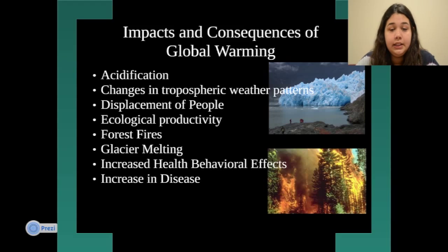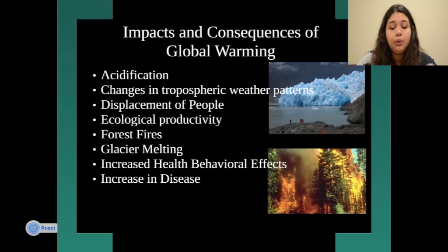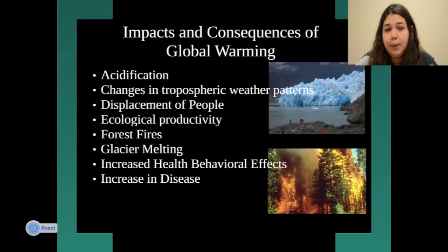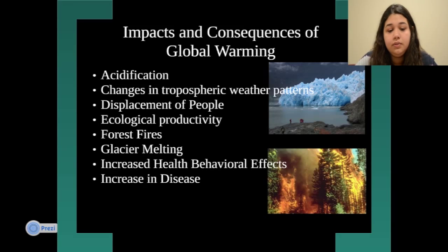Global warming also impacts ecological productivity — the ecological output of the environment around us. It increases forest fires, as shown in a picture, and causes glacier melting. As temperatures have increased, there have been more fires and widespread glacial meltdown in different areas.